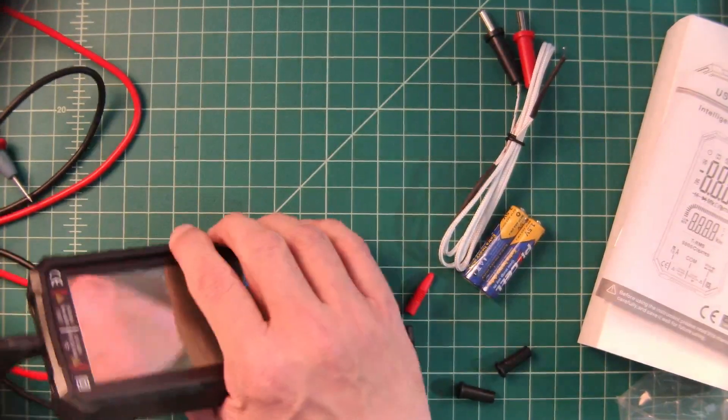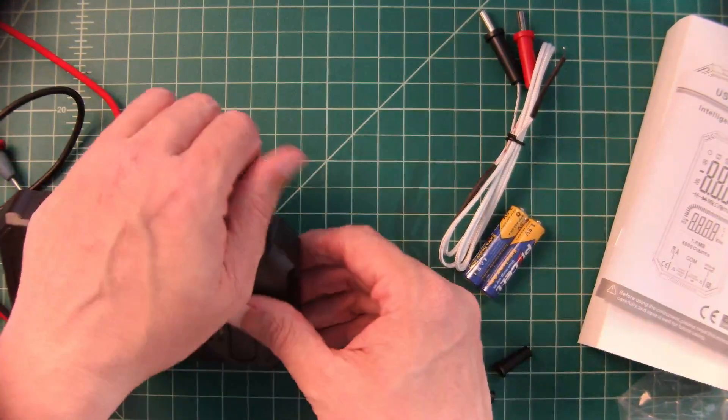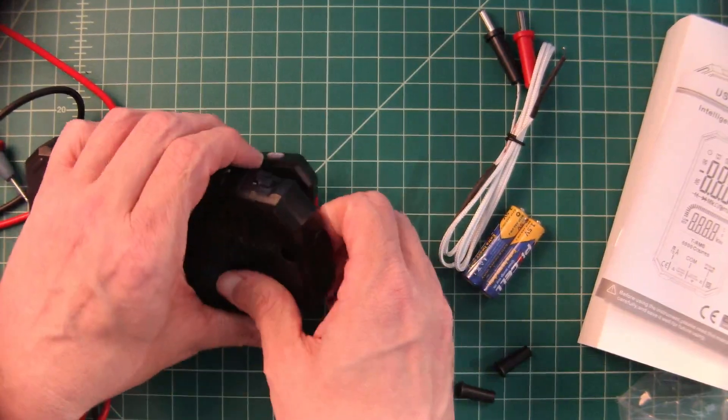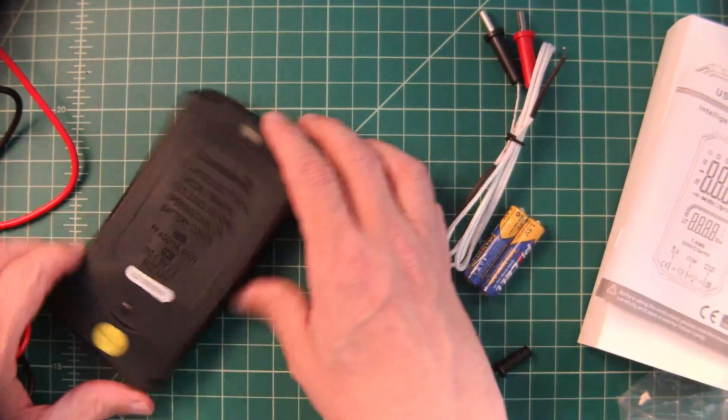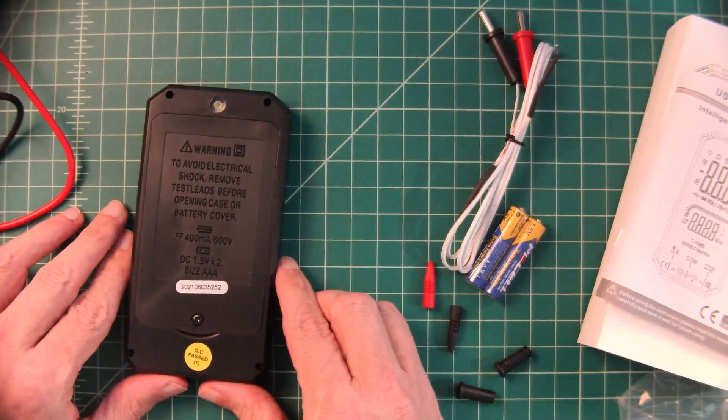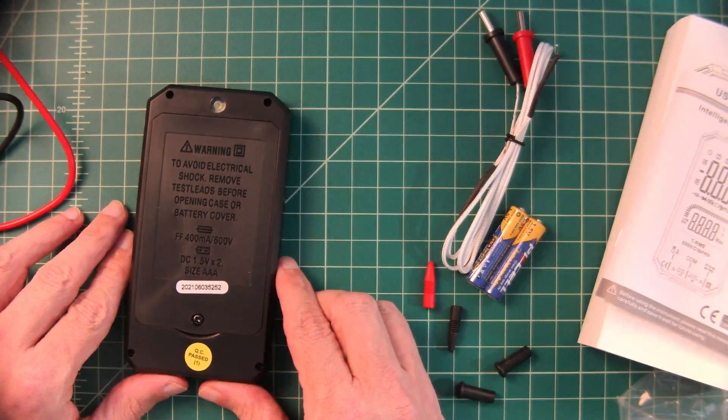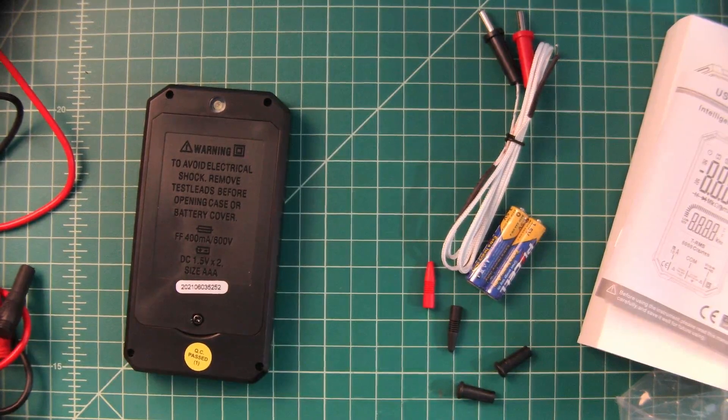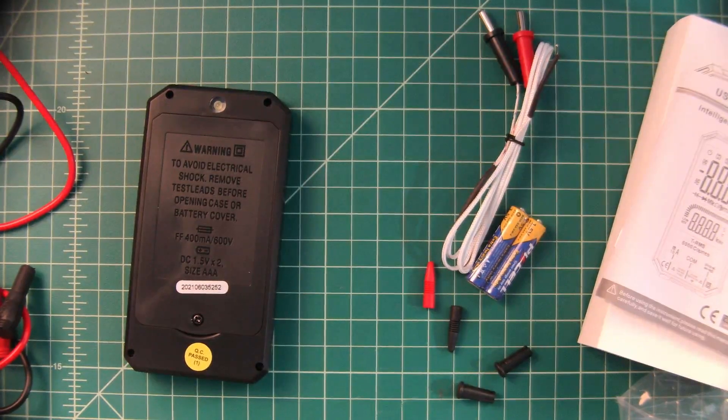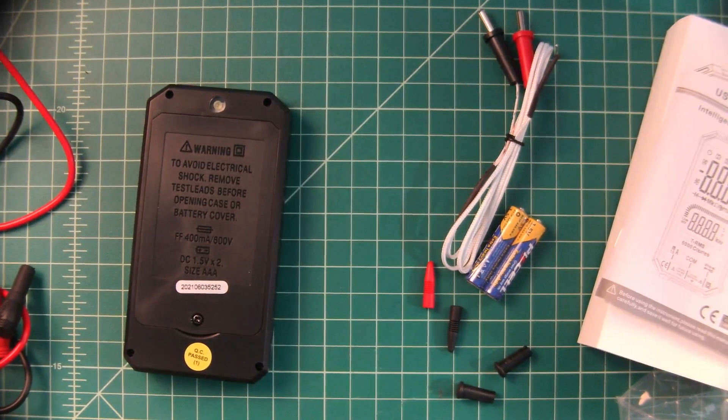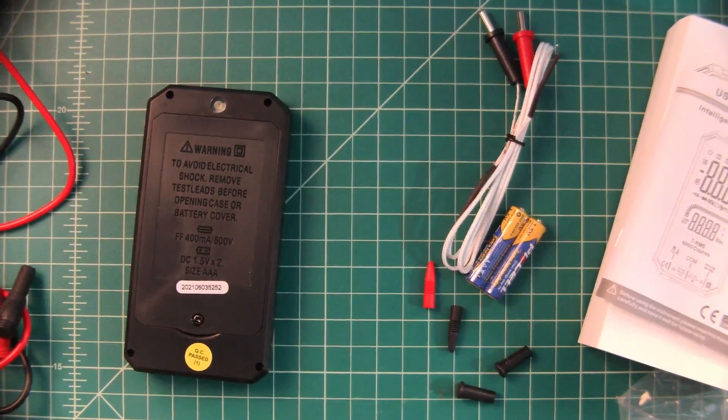Let's go ahead and get these batteries installed here. The rubberized case is nice for impact protection and it comes off pretty easily. Now there's a small Phillips head screw here that I'm going to have to undo. And what's nice about this is it actually goes into a brass insert, so you're not screwing the screw in the plastic, which is something you sometimes see on cheaper meters.